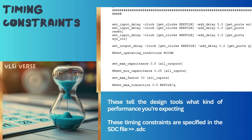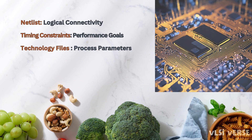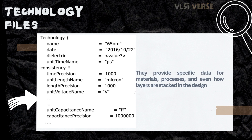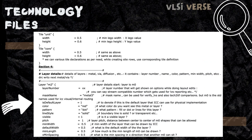Technology files are closely tied to the PDK. They provide specific data for materials, processes, and how layers are stacked in the design. If you're working with different technology nodes — say 7nm versus 5nm — the technology file will change accordingly. For example, if you're designing a GPU, you'd use a netlist to define its logical function, timing constraints to ensure it hits the desired clock speed, and technology files to make sure it adheres to the foundry's 5nm process.